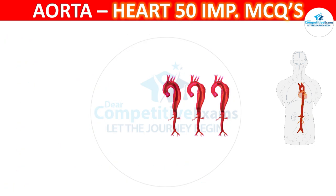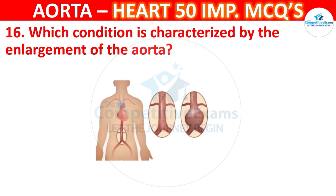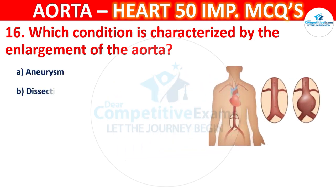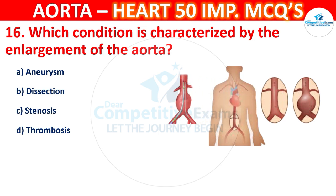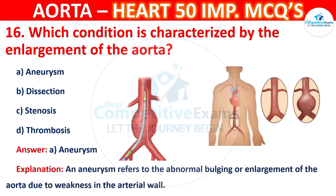Question number 16: Which condition is characterized by the enlargement of the aorta? Options are aneurysm, dissection, stenosis, or thrombosis. The correct answer is A — aneurysm. An aneurysm refers to the abnormal bulging or enlargement of the aorta due to weakness in the arterial wall.